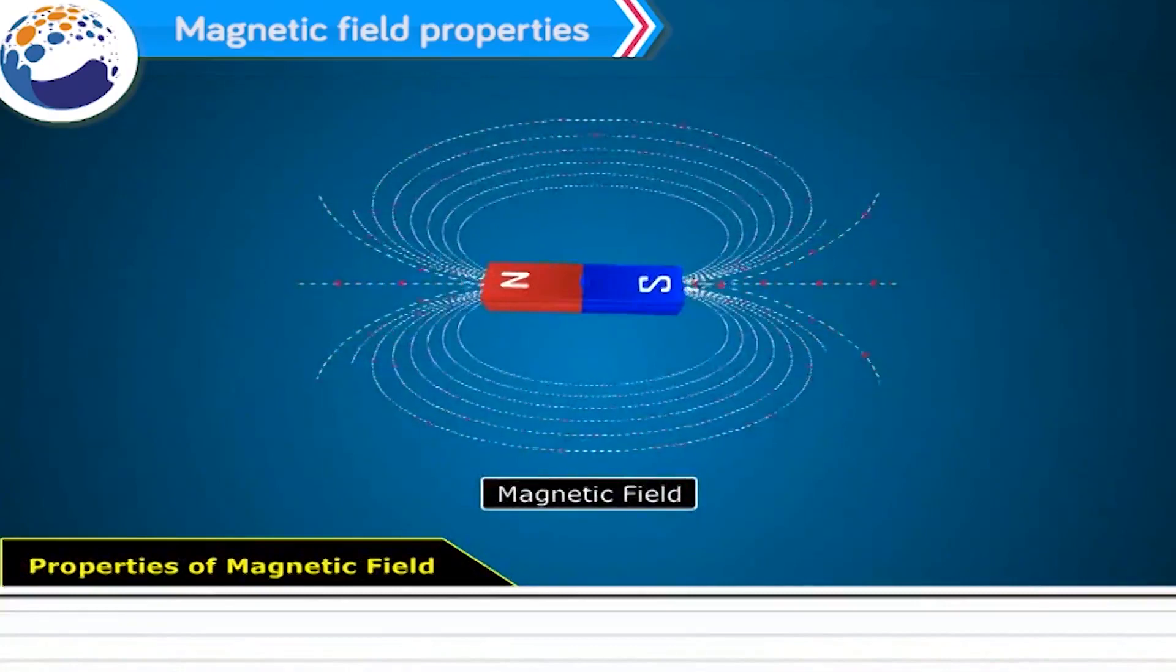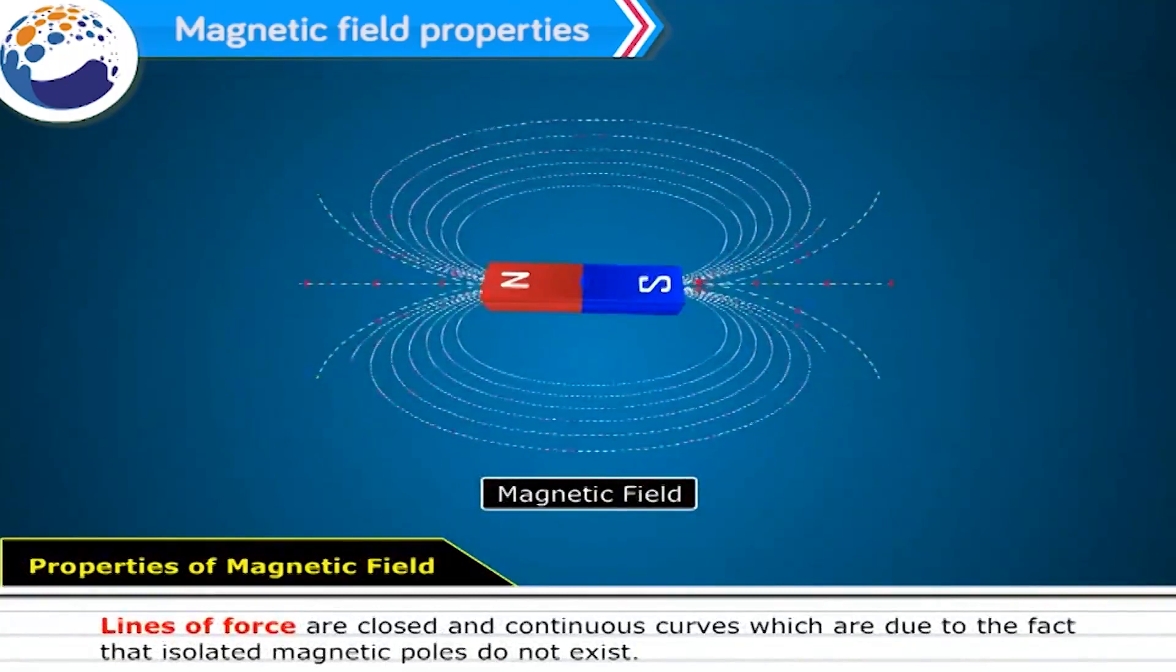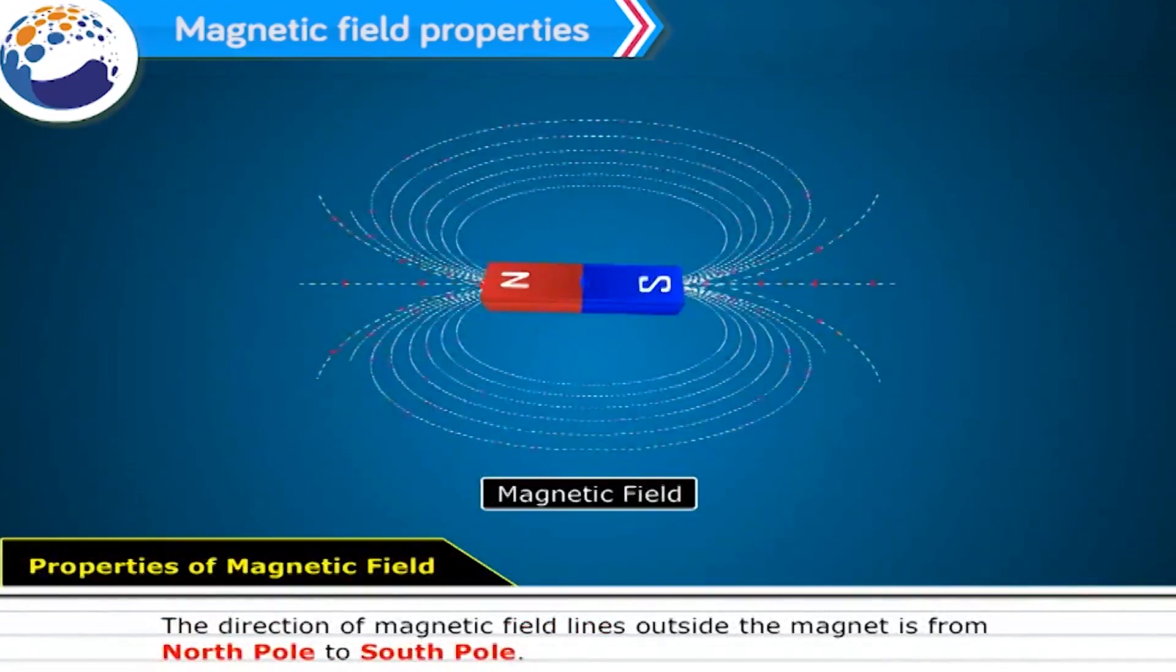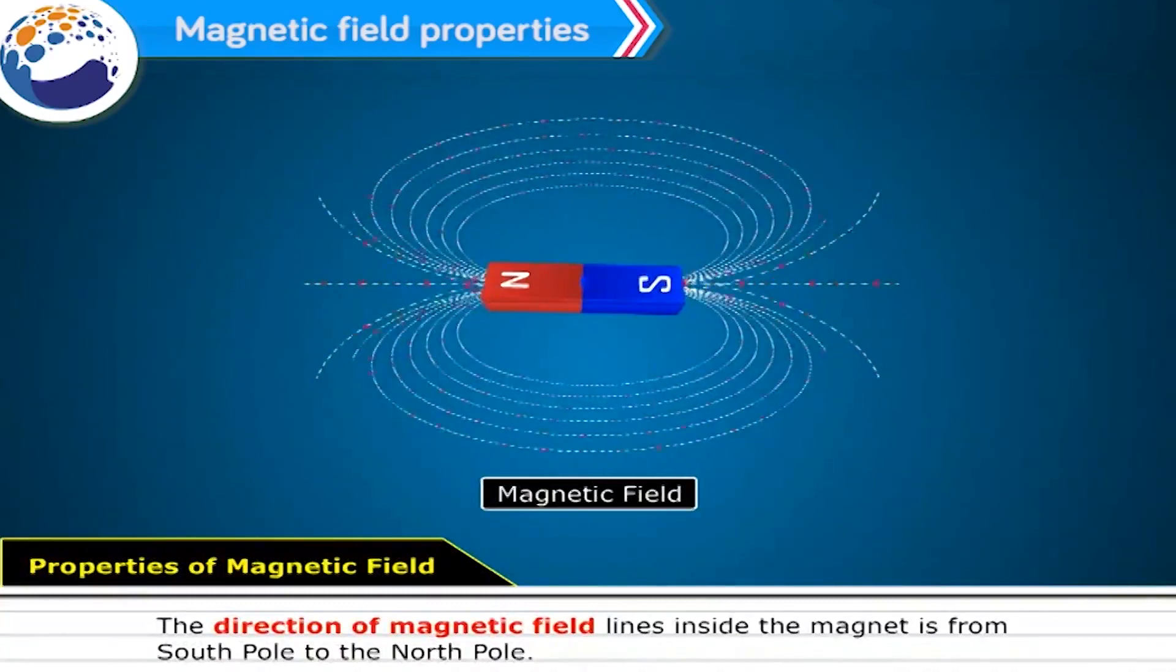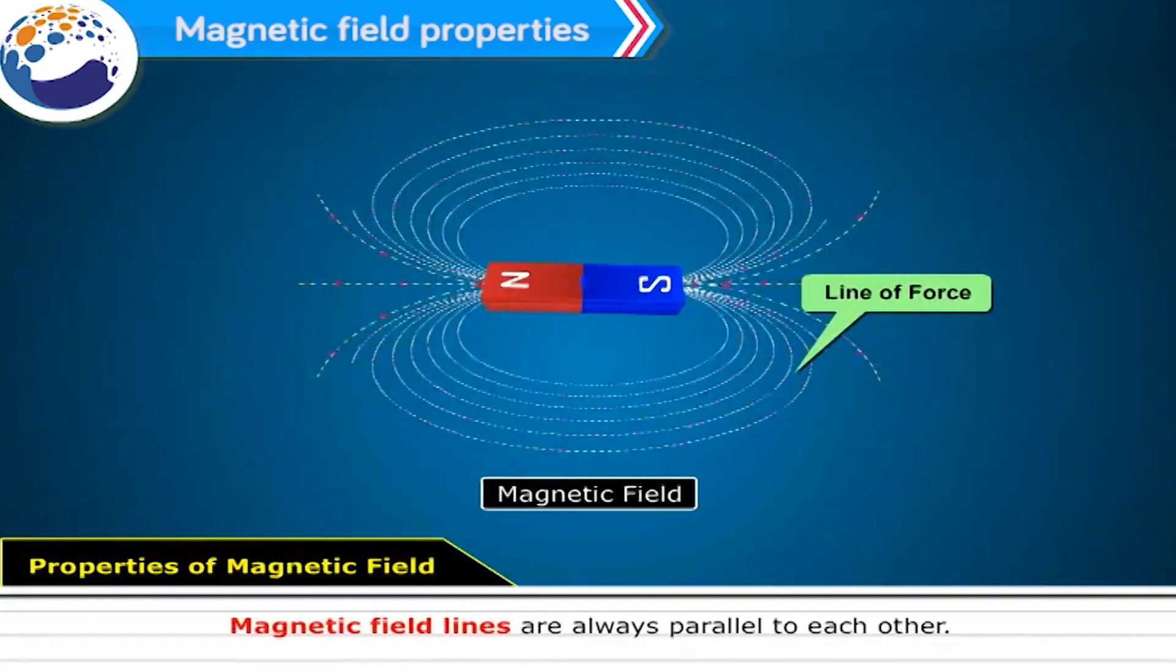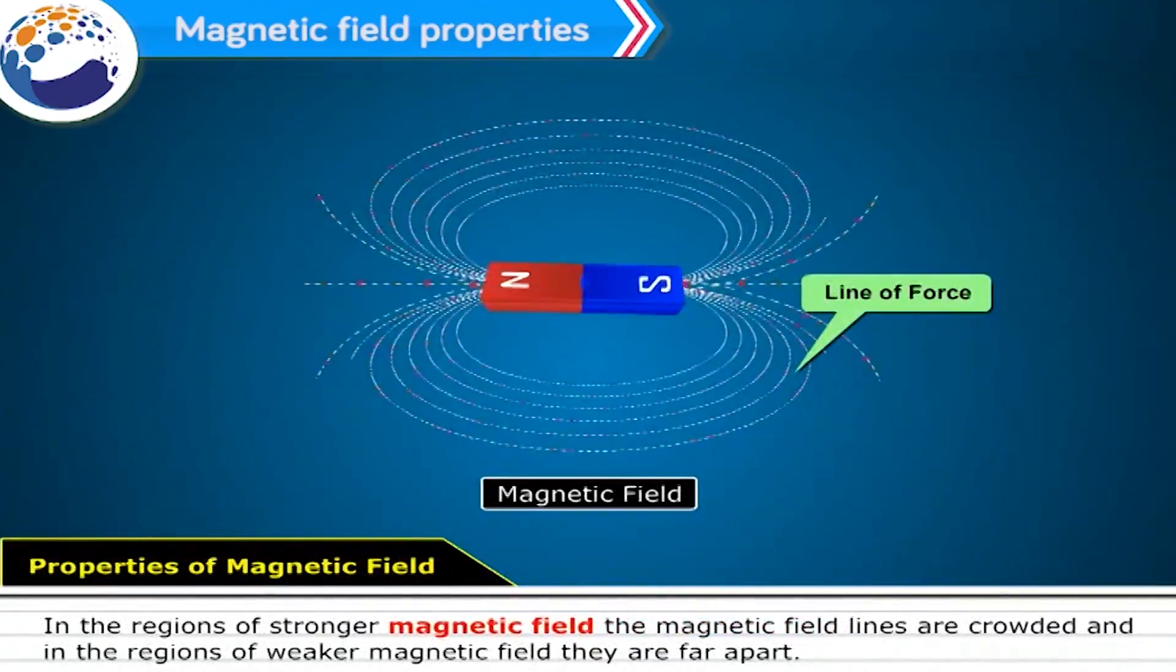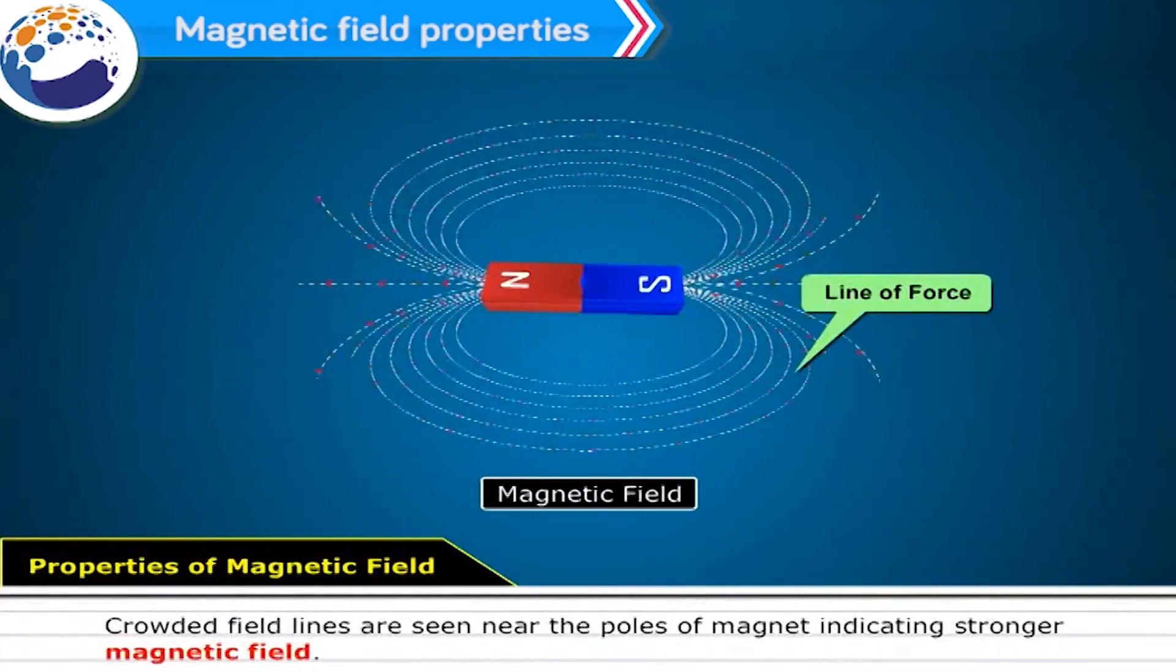Properties of magnetic field. Lines of force are closed and continuous curves which are due to the fact that isolated magnetic poles do not exist. The direction of magnetic field lines outside the magnet is from north pole to south pole. The direction of magnetic field lines inside the magnet is from south pole to the north pole. Lines of force repel each other. Lines of force never intersect. Magnetic field lines are always parallel to each other. In the regions of stronger magnetic field, the magnetic field lines are crowded, and in the regions of weaker magnetic field, they are far apart. Crowded field lines are seen near the poles of magnet indicating stronger magnetic field.